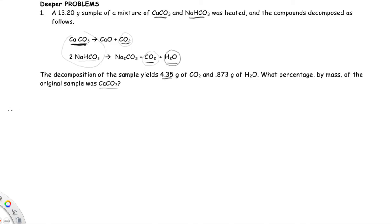So if I start with 0.873 grams of water and I work back, I figure out how many grams of sodium bicarbonate I had in the mixture, I could subtract from 100% and get calcium carbonate.